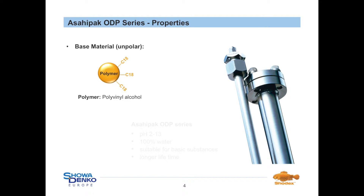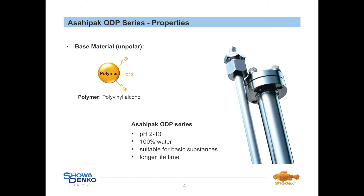The ASSA HIPAC ODP series is one of the most important reversed-phase columns in Shodex's assortment. As the stationary phase consists of pure polymer-based C18 particles, the limitations and drawbacks of traditional silica-based reversed-phase columns are overcome. C18-modified polyvinyl alcohol particles are used as the stationary phase. Polymer-based columns, especially the ODP series, can be used within an extended pH range from 2 to 13, whereas silica-based ones only up to 7.5. Additionally, 100% water can be used as eluent, and due to the absence of free silanol groups, simple analysis of basic substances is possible without high salt concentrations or ion pair reagents. The polymeric material also offers 2 to 3 times higher lifetime compared to silica-based columns.